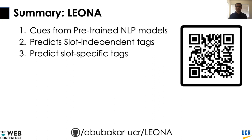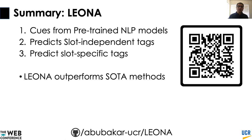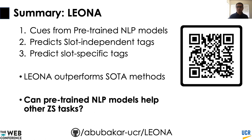To summarize, our model LEONA works in three steps: Step 1 employs pre-trained NLP models to acquire domain-oblivious features; Step 2 fine-tunes these features and predicts slot-independent tags; Step 3 exploits a learned similarity function to predict slot-specific tags. Our proposed approach outperforms existing methods consistently on all four public datasets in a wide range of experimental setups. We are further exploring whether pre-trained NLP models can boost performance on other zero-shot tasks. All related code and datasets are available on our GitHub repository. Thank you — I look forward to the Q&A session.